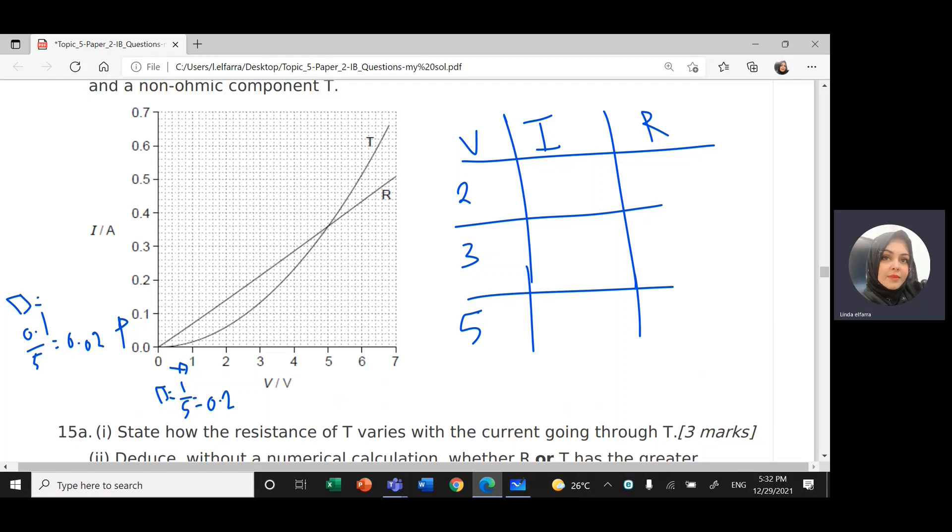At 2, at 2, at 2 here. What is the value of this voltage? Here I have 3, 3 times 0.02, so it's 0.06.